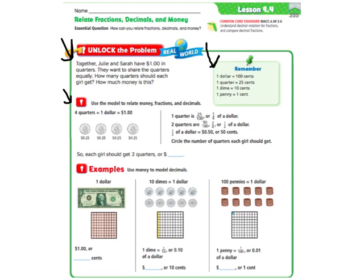And they've also given us a reminder that $1 equals 100 cents, one quarter equals 25 cents, a dime is 10 cents, and a penny is 1 cent. Just so that we can use that information in case you didn't know.